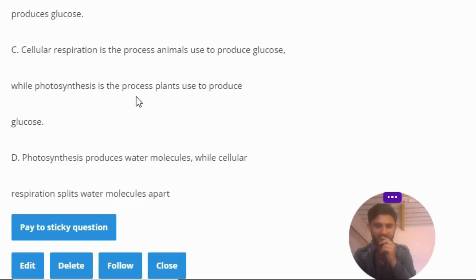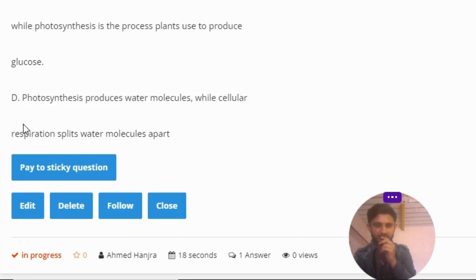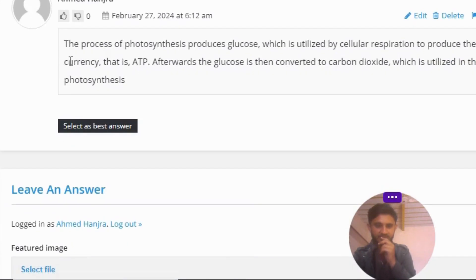D. Photosynthesis produces water molecules while cellular respiration splits water molecules apart. The correct answer to the question is: the process of photosynthesis produces glucose...